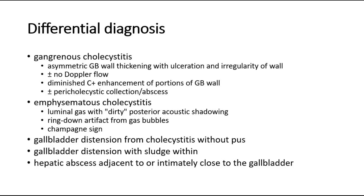Differential diagnoses include: gangrenous cholecystitis, with asymmetric gallbladder wall thickening with ulceration and irregularity of the wall, plus or minus no Doppler flow, diminished contrast-enhanced portions of the gallbladder wall, with or without pericholecystic collection or abscess. Emphysematous cholecystitis, where we can see luminal gas with dirty posterior acoustic shadowing, ring-down artifact from gas bubbles, and champagne sign. Gallbladder distension from cholecystitis without pus. Gallbladder distension with sludge within. And hepatic abscess adjacent to or intimately close to the gallbladder.